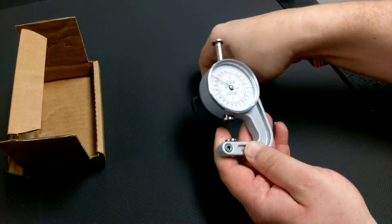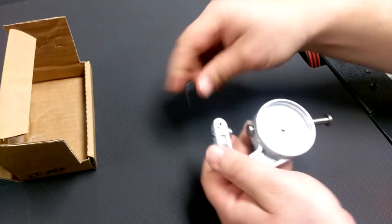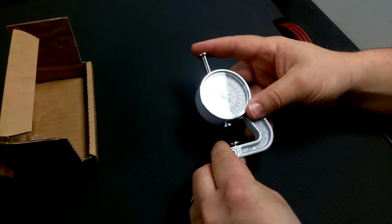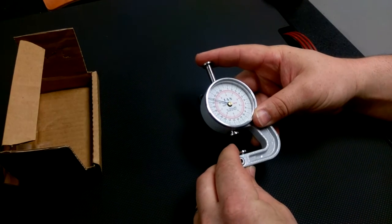To recalibrate that, if that zero is off, you simply loosen this screw. That allows you to raise and lower this anvil independently.